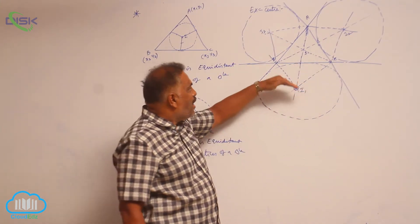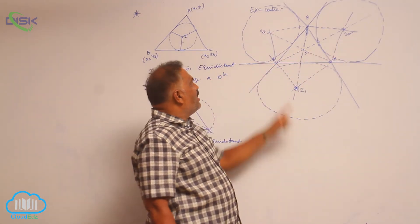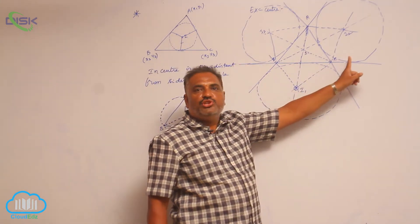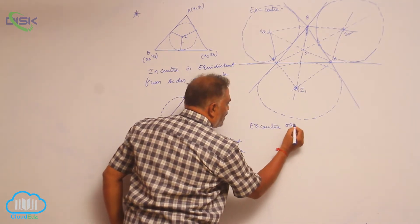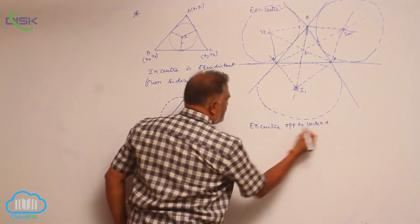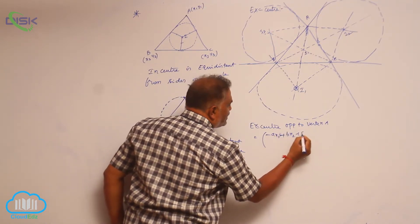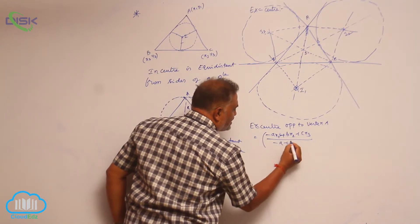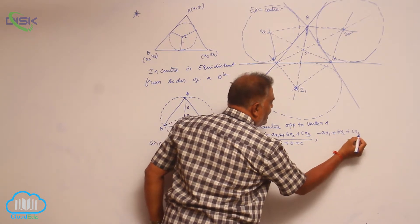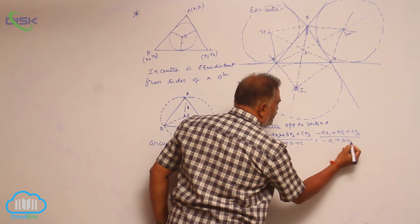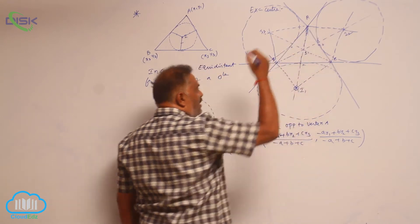I1 is the excenter opposite to vertex A. I2 is the excenter opposite to vertex B. I3 is the excenter opposite to vertex C. Here A, B, C are the lengths of the sides of the triangle opposite to the respective vertices.